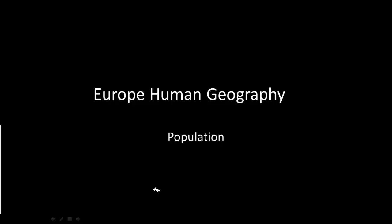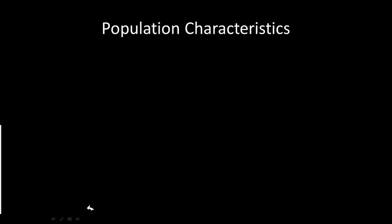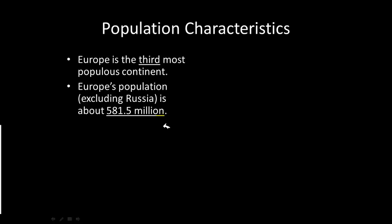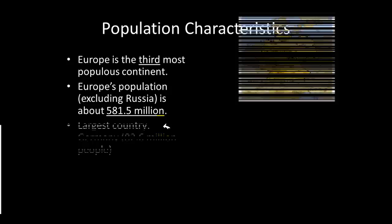We'll be covering Europe's human geography — population for part one, then the economy for part two. When we start talking about the population characteristics of Europe, one key thing to realize is that Europe, even though it is a very small continent, is the third most populous continent. Even though it is the second smallest continent by size, the population of Europe — not including Russia — is right at 581.5 million. Like most Western countries, Europe's population is pretty stagnant.